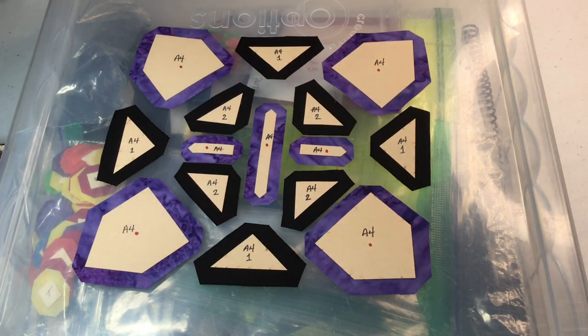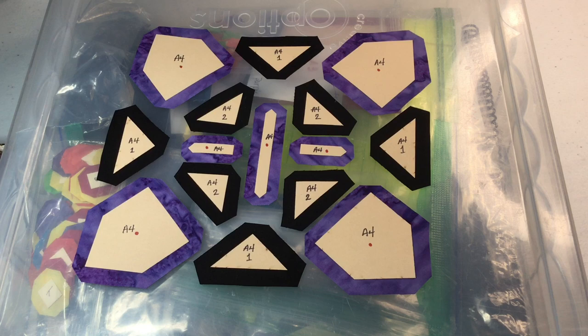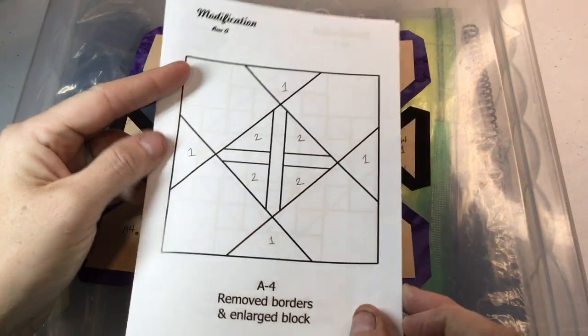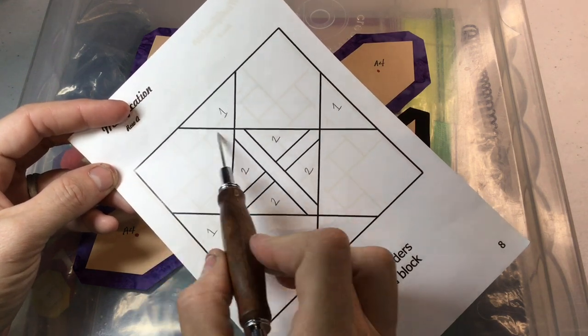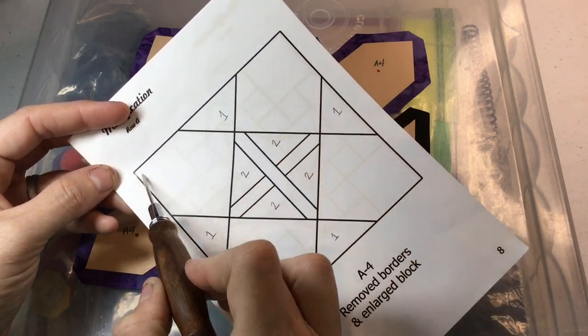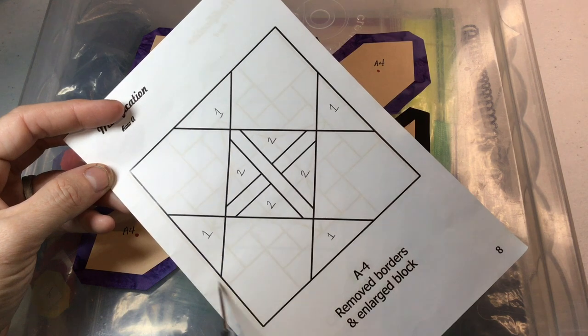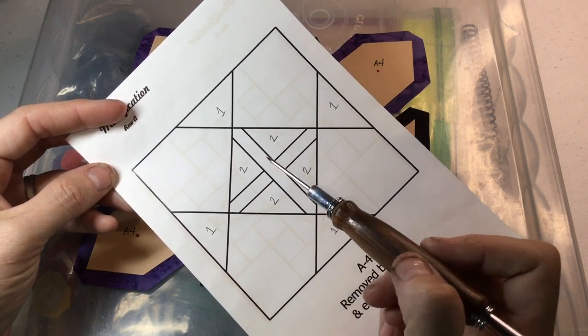I've got my block laid out, and what we're going to do is treat this like it's an on-point block. If you look at it like this, this is a row, this is a row, and this is a row, and that's how we're going to assemble it.